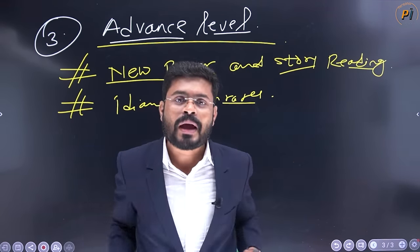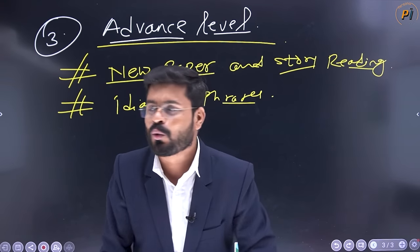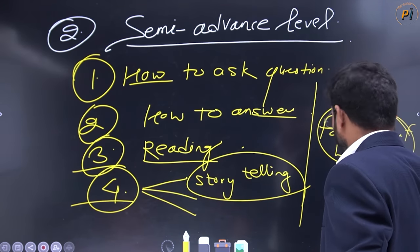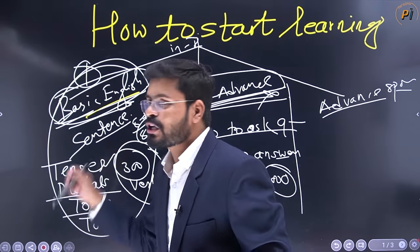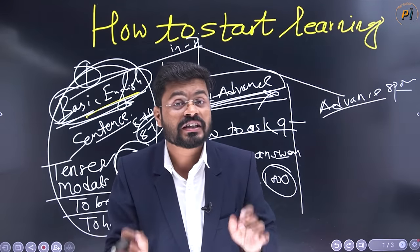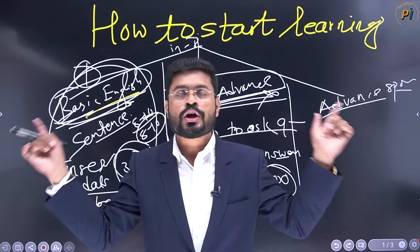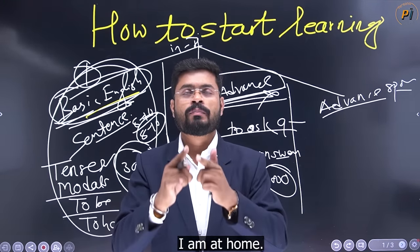If you think that after completing both levels you are still not able to speak English, the problem is that you have not completed your basic English. In basic English, your translation must be good and your brain must hold many sentences: 'I am at home,' 'I am learning English,' 'I want to learn English,' 'I will help you,' 'I can help you.' These sentences must be strong. Then semi-advanced will follow, and then the advanced level. For the advanced level, idioms and phrases play a very important role.